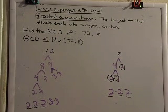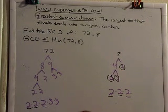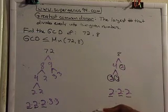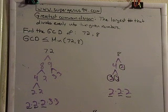So between 72 and 8, they have three factors of 2, which is 2 cubed. And then what is 2 cubed? 8. So the GCD between 72 and 8 is 8.